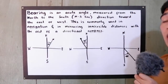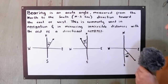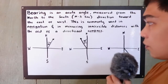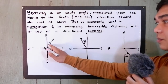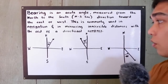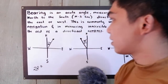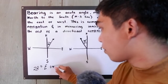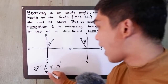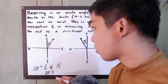So that is the definition of bearing. Now we have our examples — three illustrations. How are we going to read them? The first one with 28 degrees is read as 28 degrees east of north, and can be written as 28 degrees east of north.